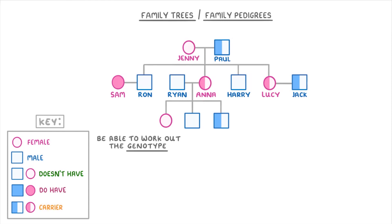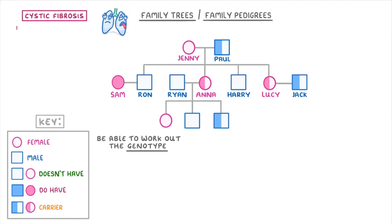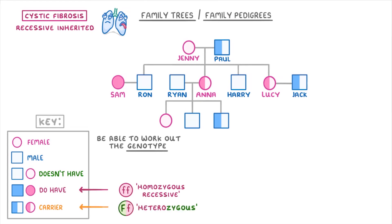You also need to be able to work out the genotype of each person using the diagram. Remember that this diagram is for cystic fibrosis, which is a recessive inherited disorder. So people with the disease will be homozygous recessive, carriers will be heterozygous, and people completely unaffected will be homozygous dominant.